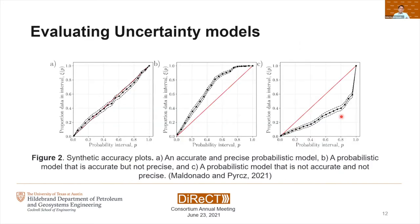We plot the proportion of data in the interval versus the probability interval, repeating for all symmetric probability intervals. The name of this plot is an accuracy plot. I have three synthetic accuracy plots for three different uncertainty models: A shows an accurate and precise probabilistic model, B shows a model that is accurate but not precise, and C shows a probabilistic model that is neither accurate nor precise.